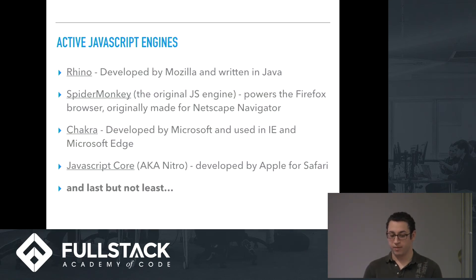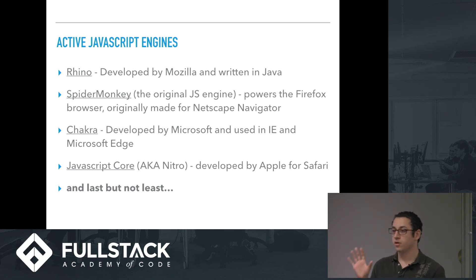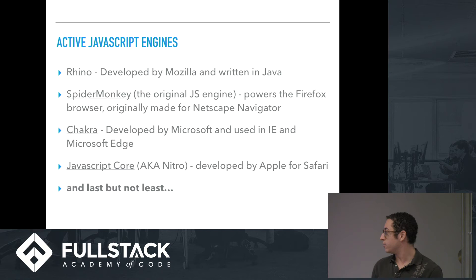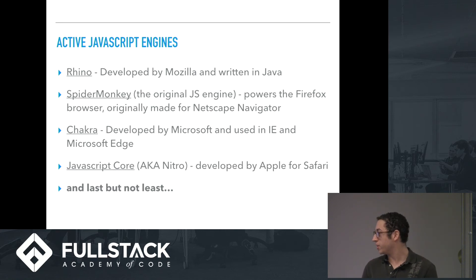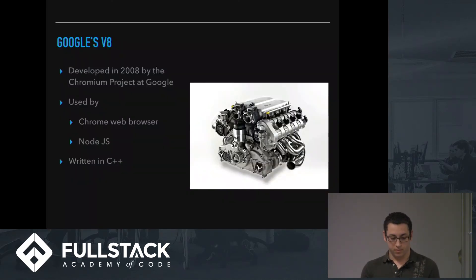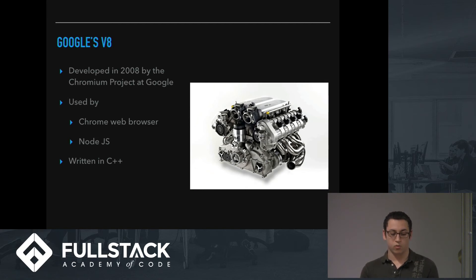These are some of the active JavaScript engines today. There's Rhino, written in Java and developed by Mozilla. SpiderMonkey, the original JavaScript engine, was originally made for Netscape Navigator but is now maintained by Mozilla and powers the Firefox browser. Chakra was developed by Microsoft and used in Internet Explorer and Microsoft Edge. JavaScriptCore, marketed as Nitro, was made by Apple for Safari. And Google V8 was created by Google's Danish division as part of the Chromium project — it's used by the Chrome web browser as well as Node.js, and it's written in C++.